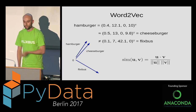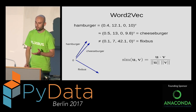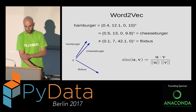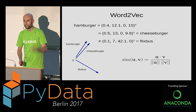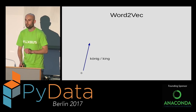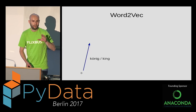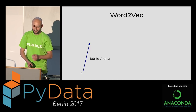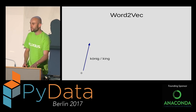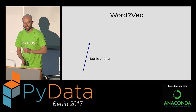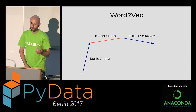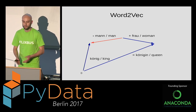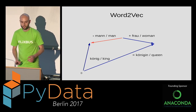We can compute similarities between word vectors using cosine similarity — the dot product divided by the product of the norms. But that's not all: you can also do mathematical operations on these vectors. You've probably seen this example — king minus man plus woman equals queen. That's amazing stuff that pops out of these networks.